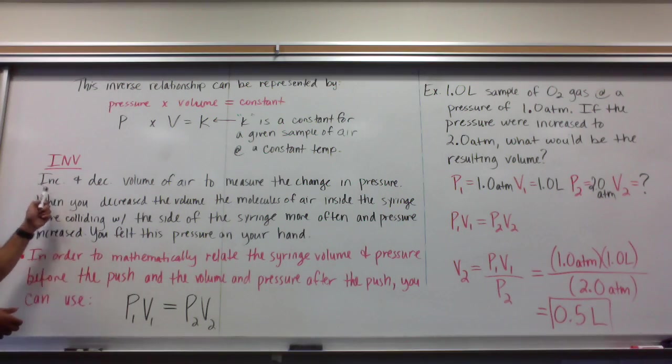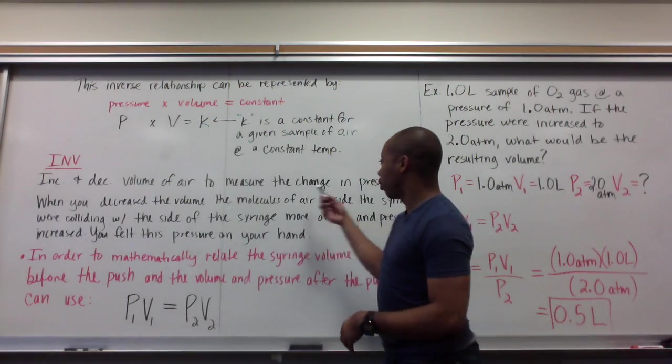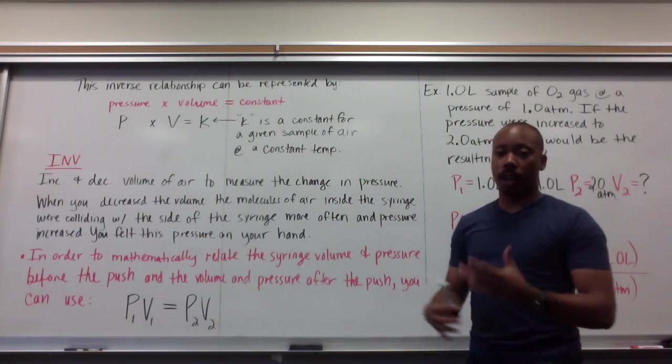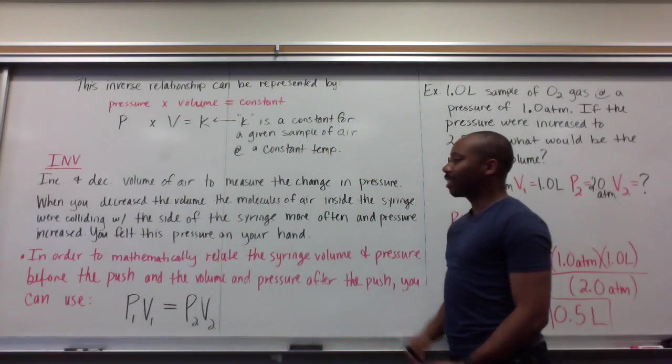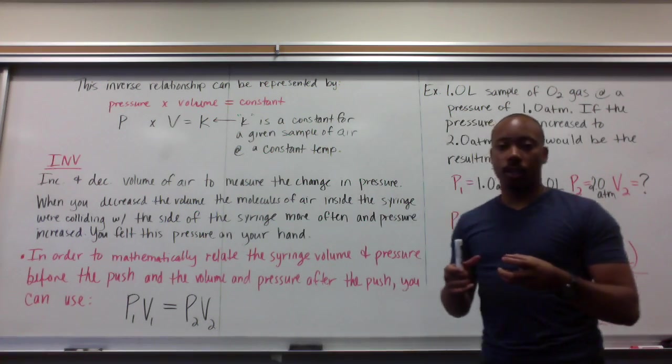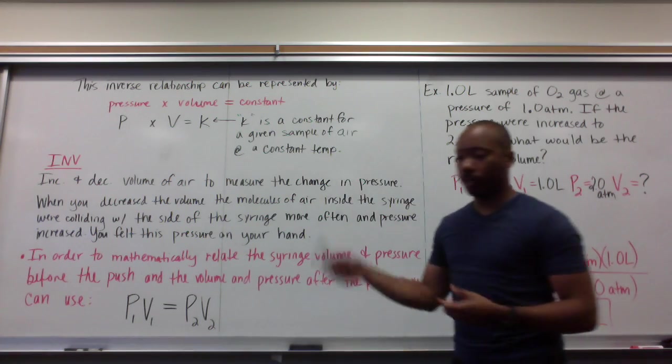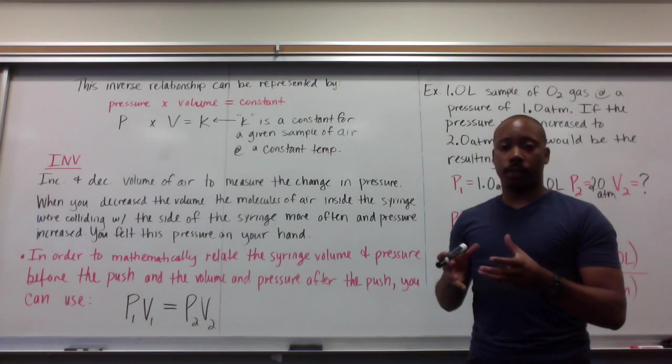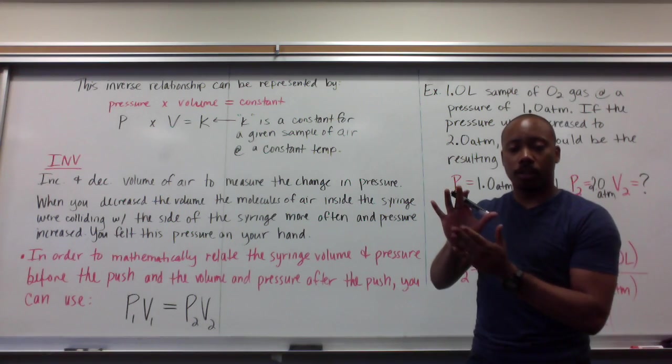In your investigation, we increased and decreased the volume of air in order to measure the change in pressure. We did that and we saw it in the graph and it was fantastic. When you decrease the volume, the molecules of air inside the syringe were colliding with the side of the syringe more often. And as a result, the pressure increased. You felt this increase on your hand. As you pushed, you felt the pressure on your hand.